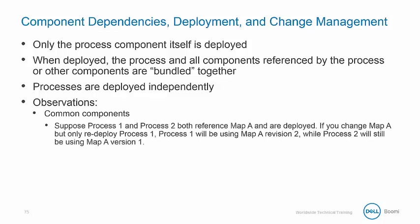Suppose process 1 and process 2 are deployed and both reference map A. If map A is changed but only process 1 is redeployed, process 1 is using map A revision 2, while process 2 is still using map A version 1. Different processes can use different versions of the same component. This allows for more granular testing, but at the expense of temporary inconsistency.